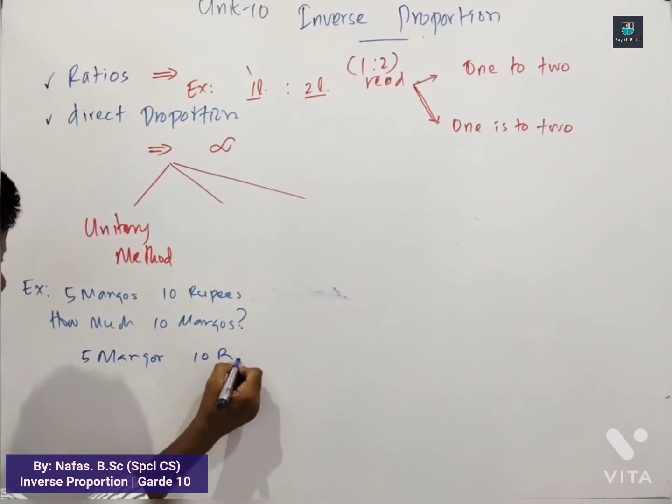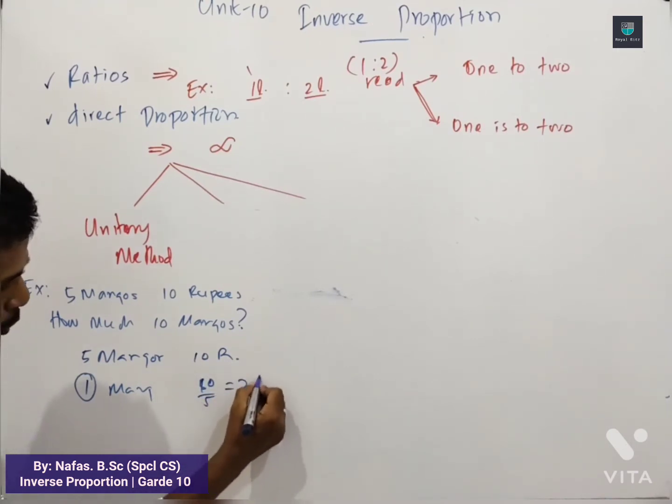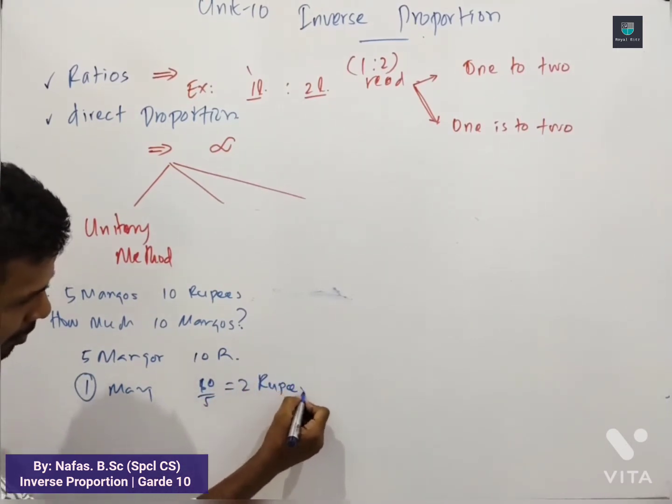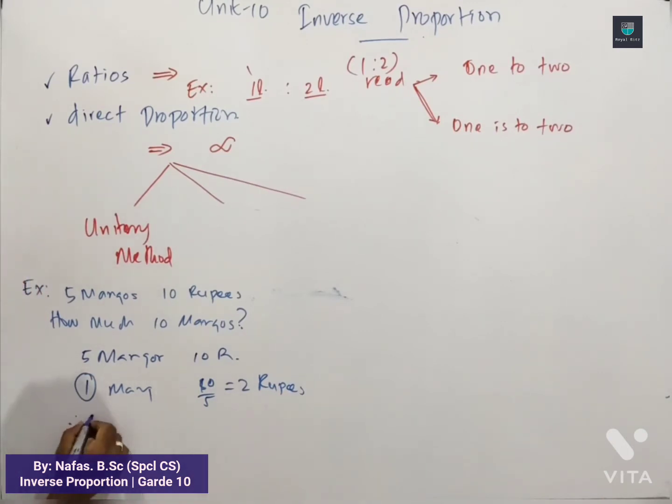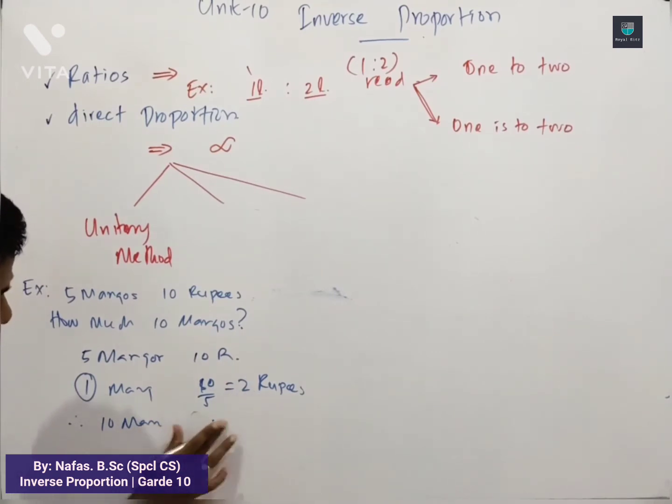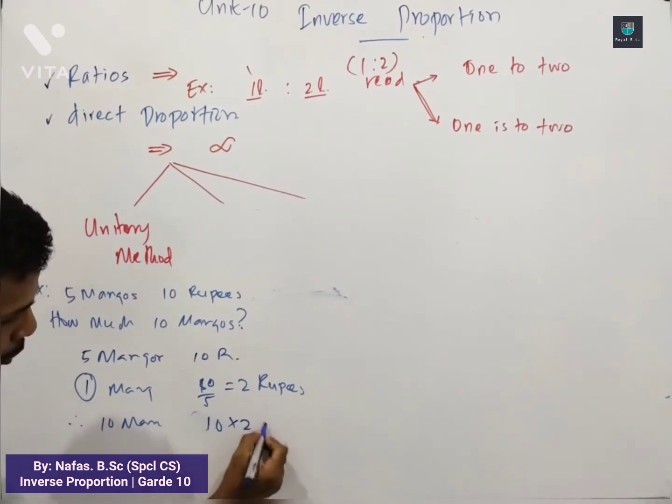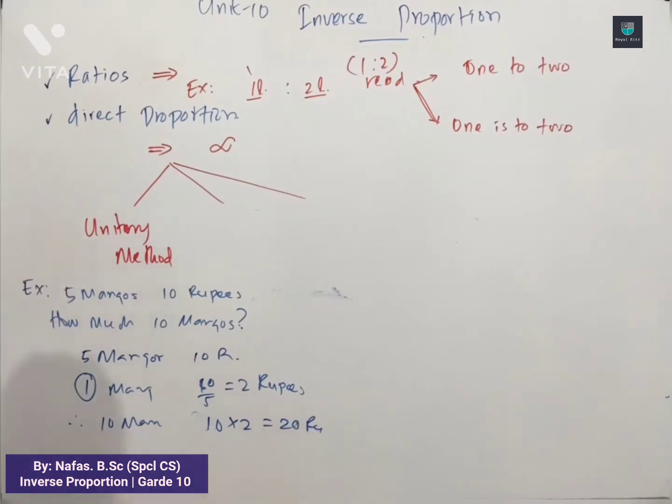Therefore One Mango is Ten divided by five, Two Rupees. Therefore Ten Mangos, Two Times, Ten times Two. This is Unitary method.